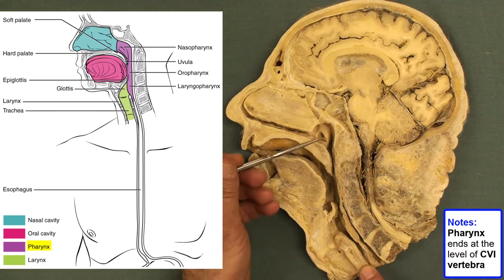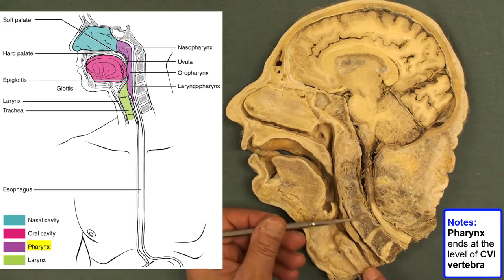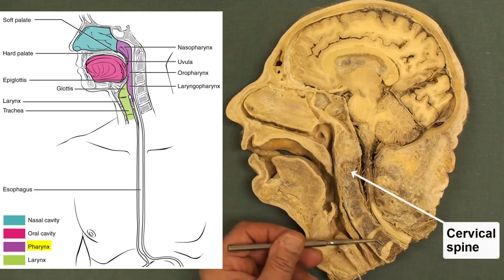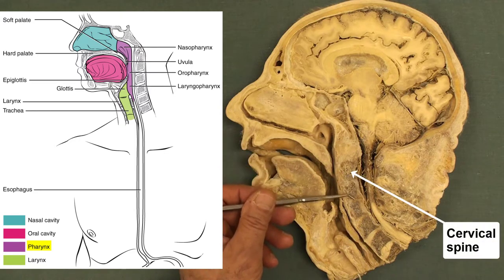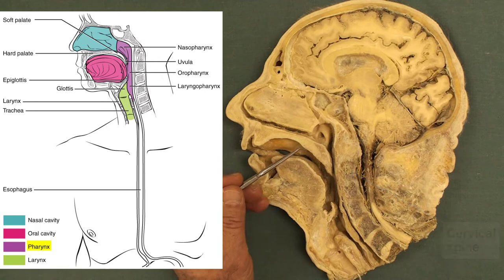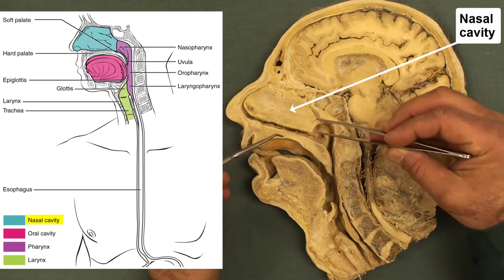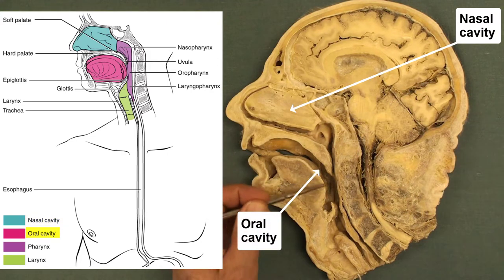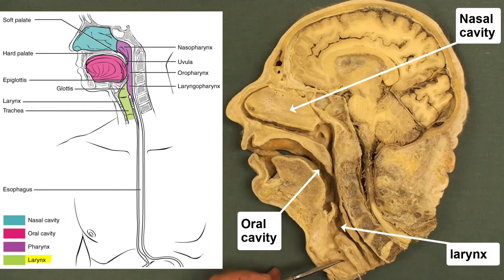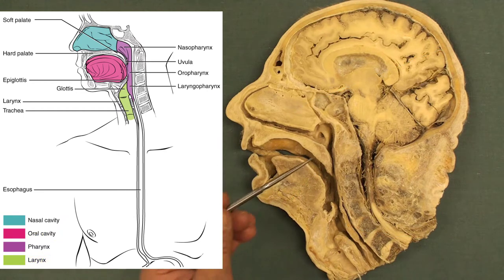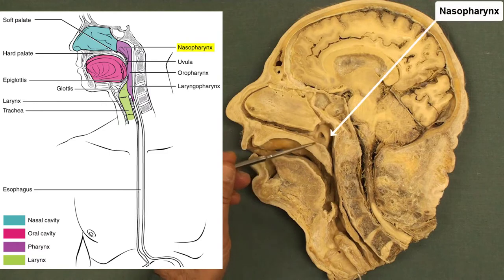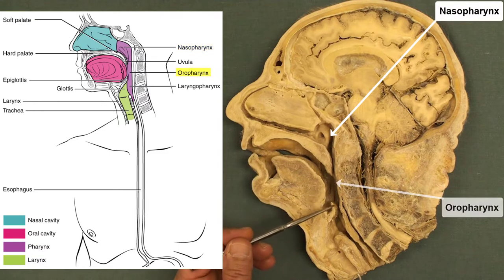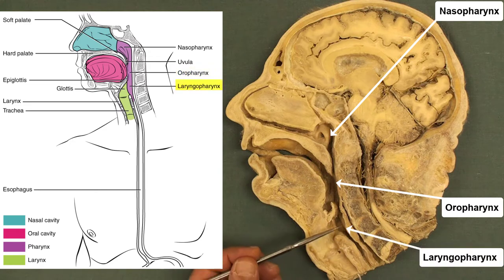This muscular tube posteriorly is associated with the cervical spine, and anteriorly is connected to three cavities: the nasal cavity, the oral cavity, and the larynx. Therefore, we have three parts of the pharynx: the nasopharynx, the oropharynx, and the laryngopharynx.